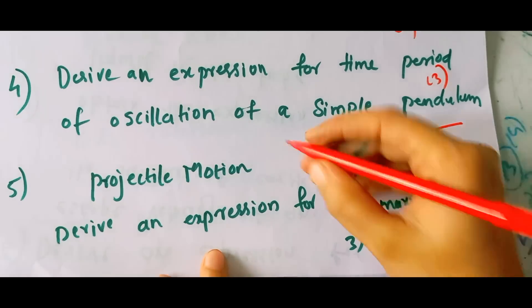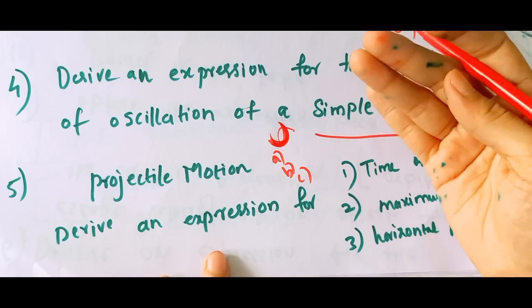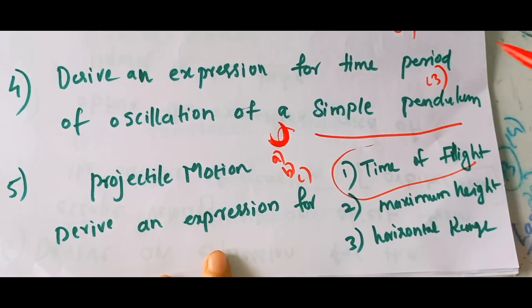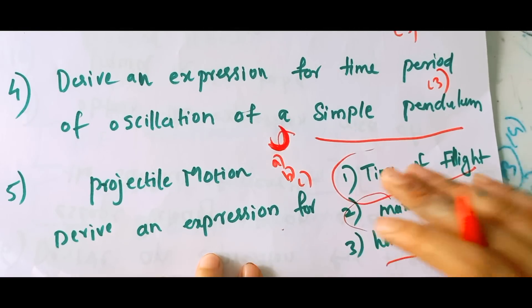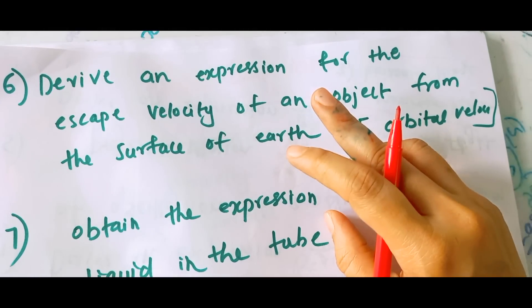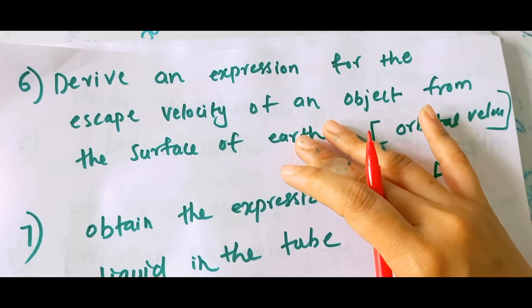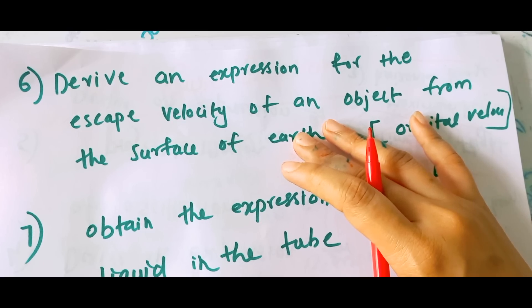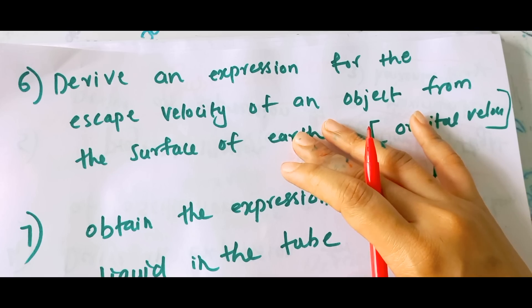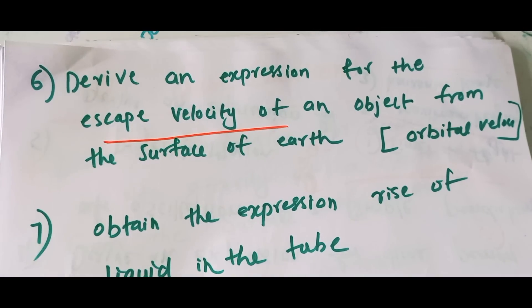A projectile motion topic will be in this model — derive an expression for maximum height and horizontal range. We have already done this; we have made a video of three derivations for projectile motion. We are also going to explain the escape velocity derivation.